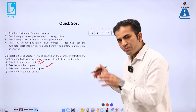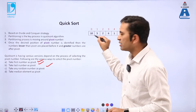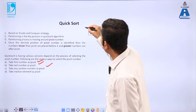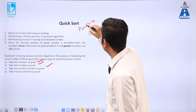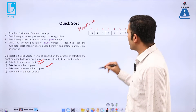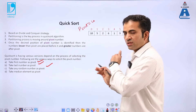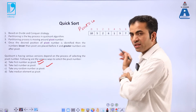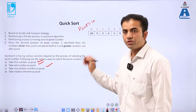Let me explain using an example. I am taking pivot number as 10, the first element. Now we need to place this pivot number in its desired position so that numbers lesser than 10 come on the left side and numbers greater than 10 come on the right side. First we need to find out the actual position of the pivot point.